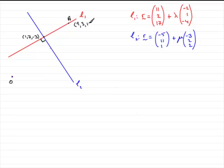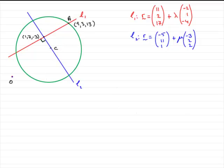It doesn't really matter where we put it, as long as we put a point on line L1. We're also told that we have a circle that passes through A, and the centre of this circle is on the blue line L2 — let's say it's here, and it's the point C. So we'll just label this C. If we draw this circle in, it's going to look something like this. The circle intersects the line L1 again at another point B, and we've got to find the position vector of point B.